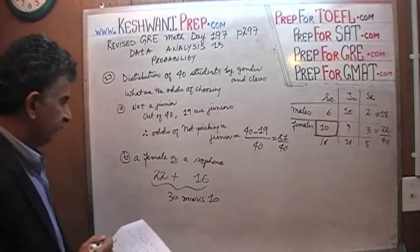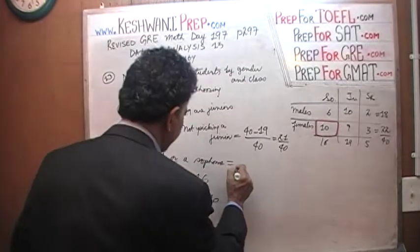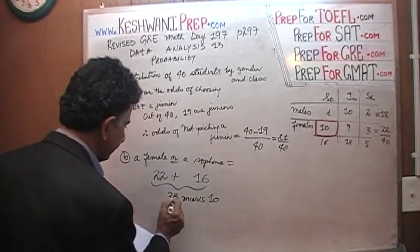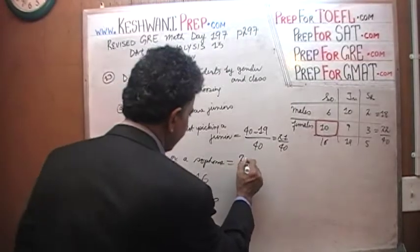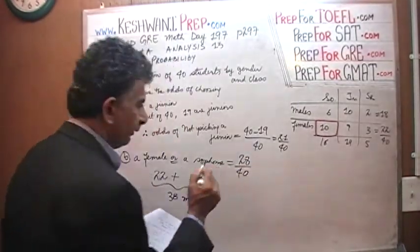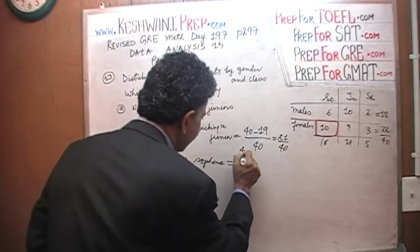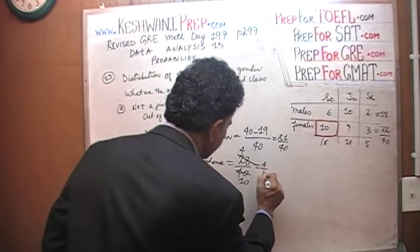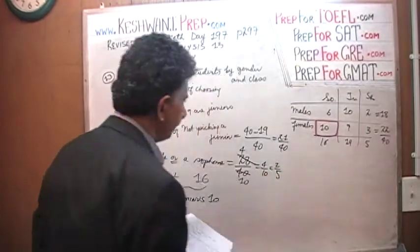So all together there are 38 minus the 10, because there are 10 that are double counted. And therefore, the odds of picking a female or a sophomore is simply 28 over 40. If we divide top and bottom by 4, there are 7s in 28 and there are 10, so it's 7 over 10.